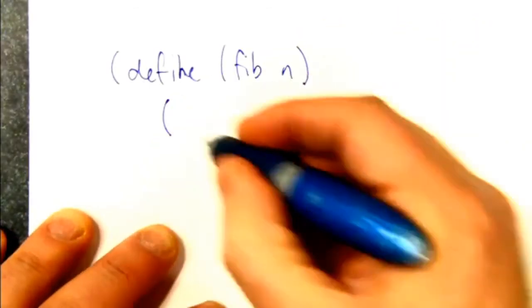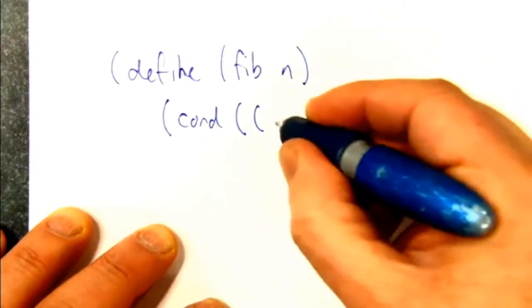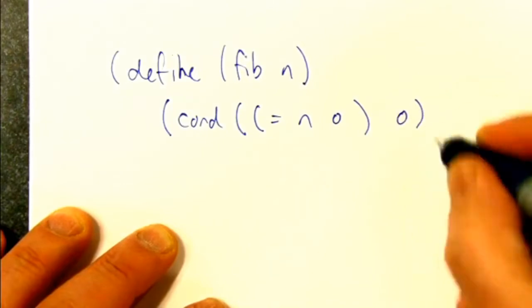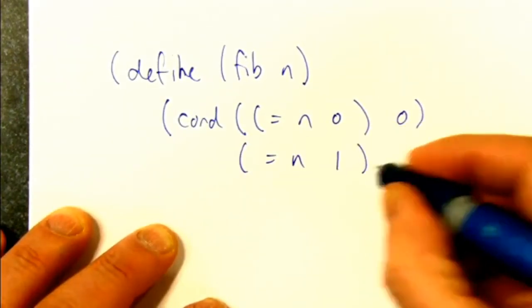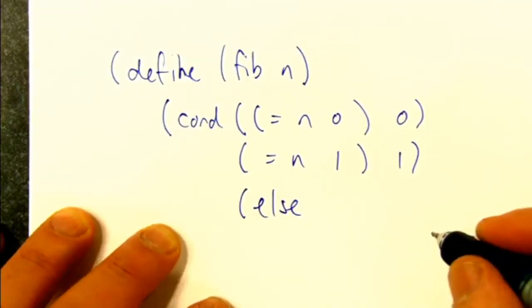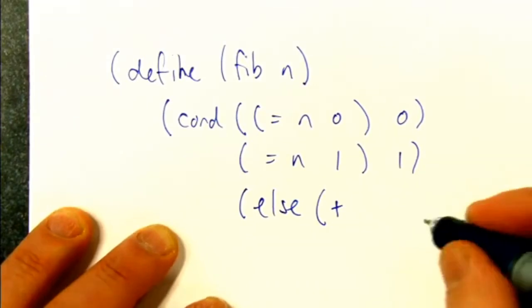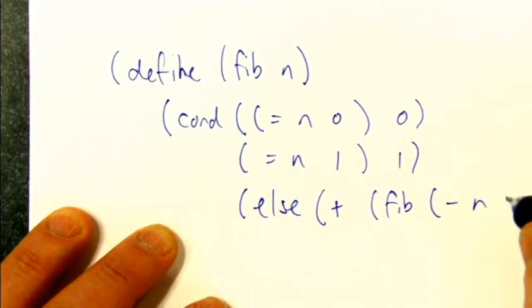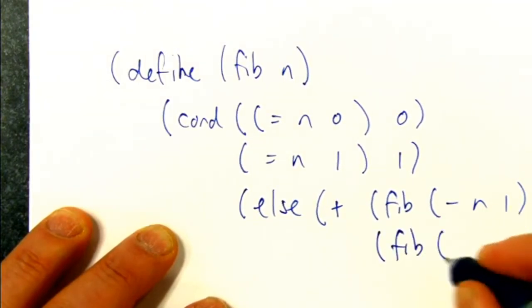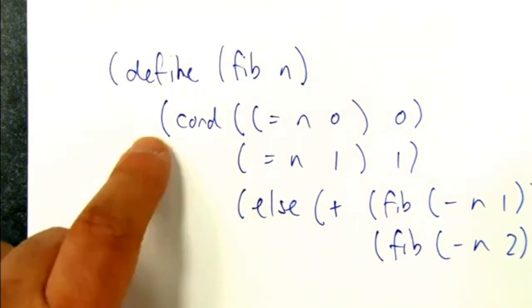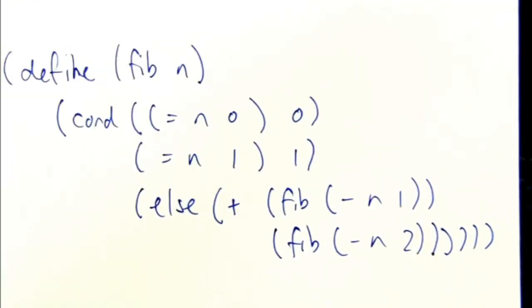Remember Fibonacci, we had a con, there were two base cases, right? If n was 0, we said it was 0. If n was 1, we said it was 1. And otherwise, we said that the Fibonacci number was the result of adding the Fibonacci of minus n1 and minus n2. Do you guys remember this? So it's a double recursion. That's going to be the way of thinking about trees. That when we work on a tree, we're going to recurse on both the car and the cutter. And that will allow us to walk our way all the way down the tree.